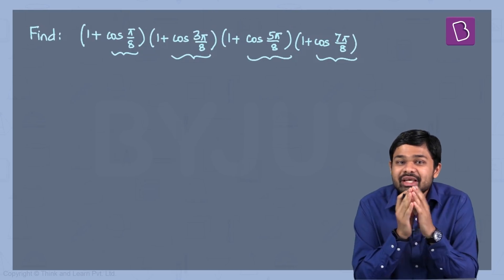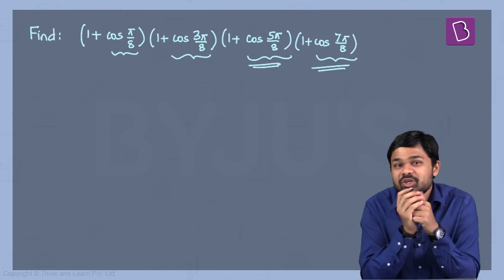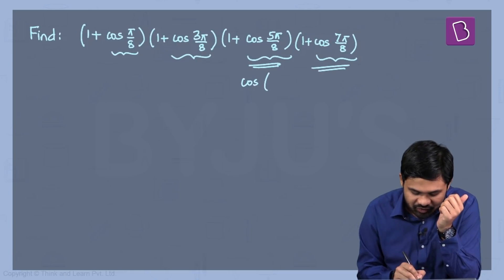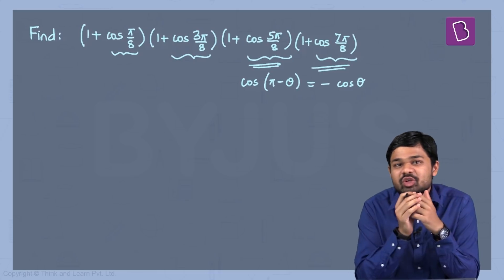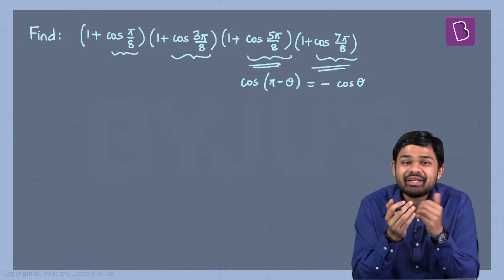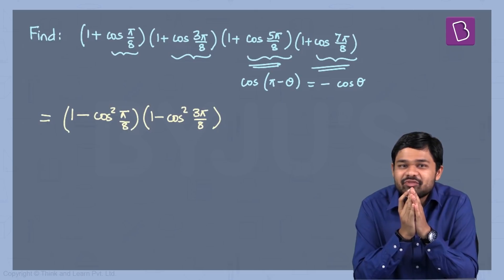This is a clear indication that you have to simplify these two terms by using the formula cos(π - θ) = -cos(θ). So if you use this particular formula, our expression now reduces to this very simple form.